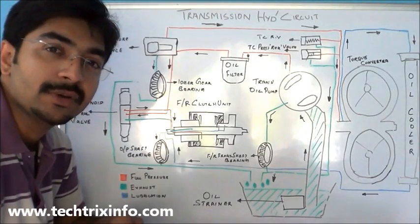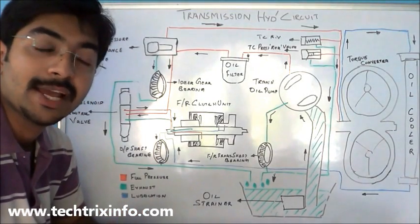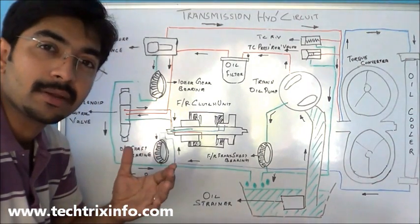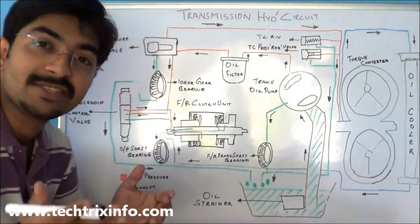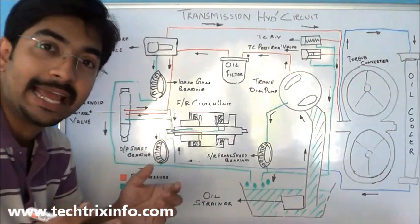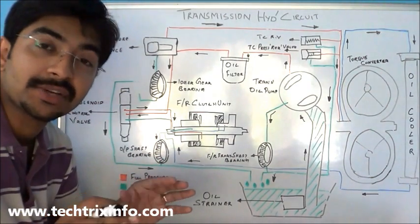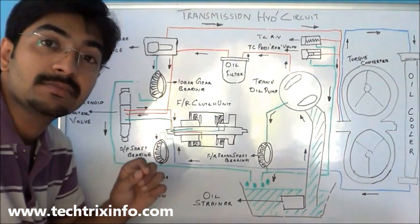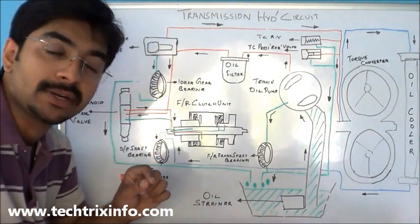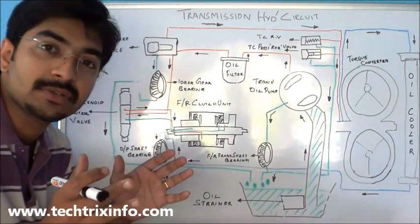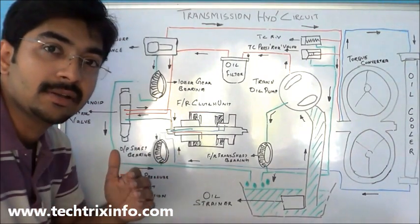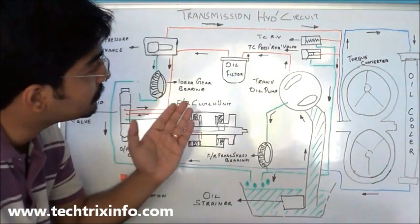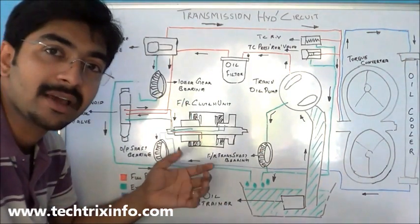Welcome to TechRicksInfo. Today we'll be learning about a transmission hydraulic circuit used in construction equipment. You have seen JCB machines, Caterpillar, L&T — construction equipment used mainly for construction activities. These machines are hydraulically operated, and the transmission is also hydraulically operated. Today let's see how the hydraulic circuit of the transmission actually works.